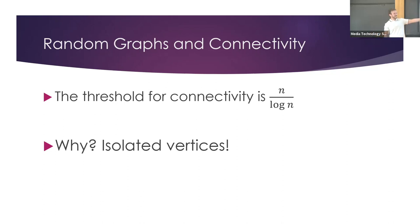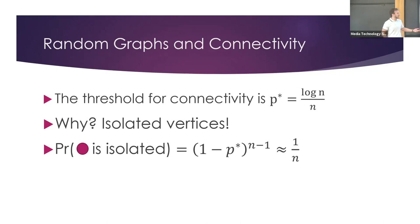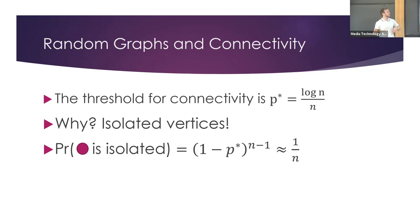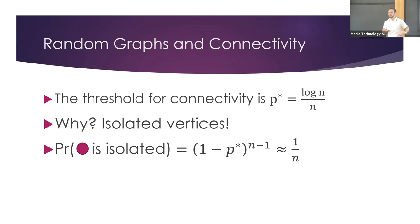The reason this is the threshold for connectivity is that this is the point at which you start having isolated vertices. The probability of a specific vertex being isolated is (1−p)^(n−1). With our threshold, this is exactly 1/n. So in expectation, this is roughly where we stop expecting isolated vertices. The bottleneck for an Erdős-Rényi graph to become connected is isolated vertices — the moment you stop having isolated vertices is the exact same moment the graph becomes connected.